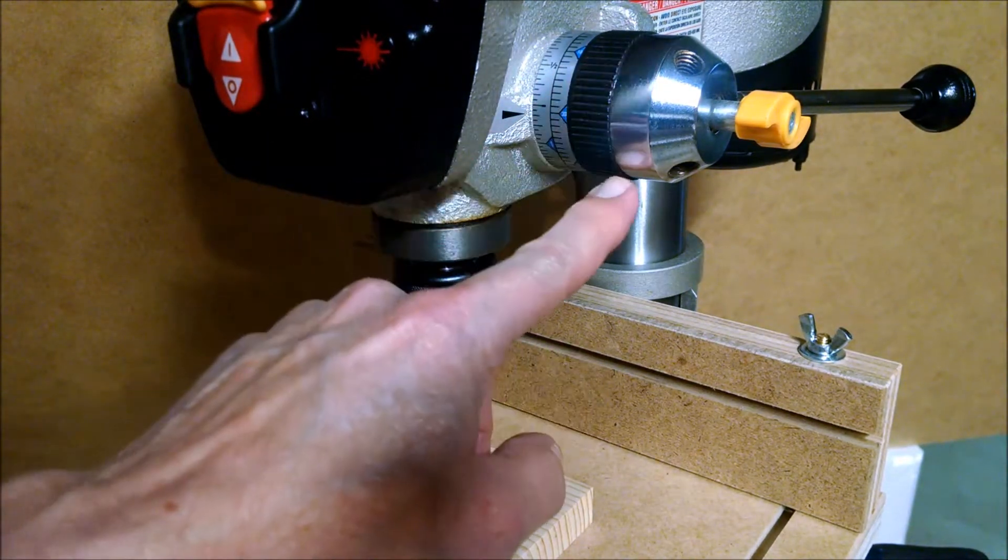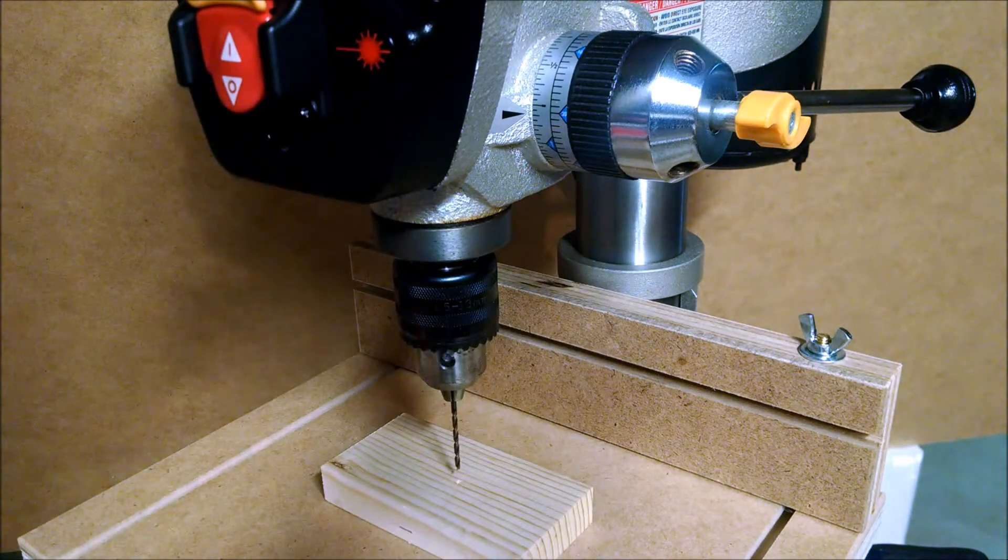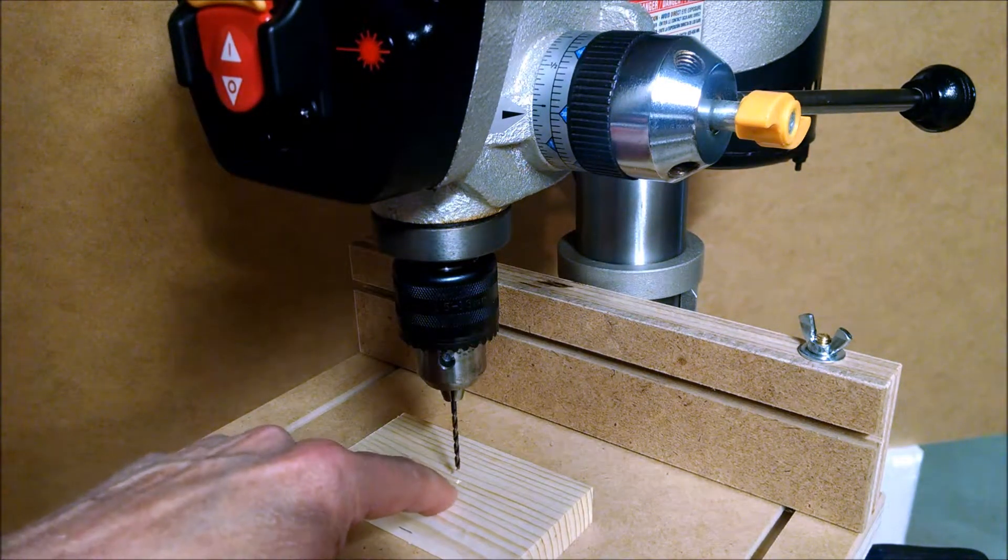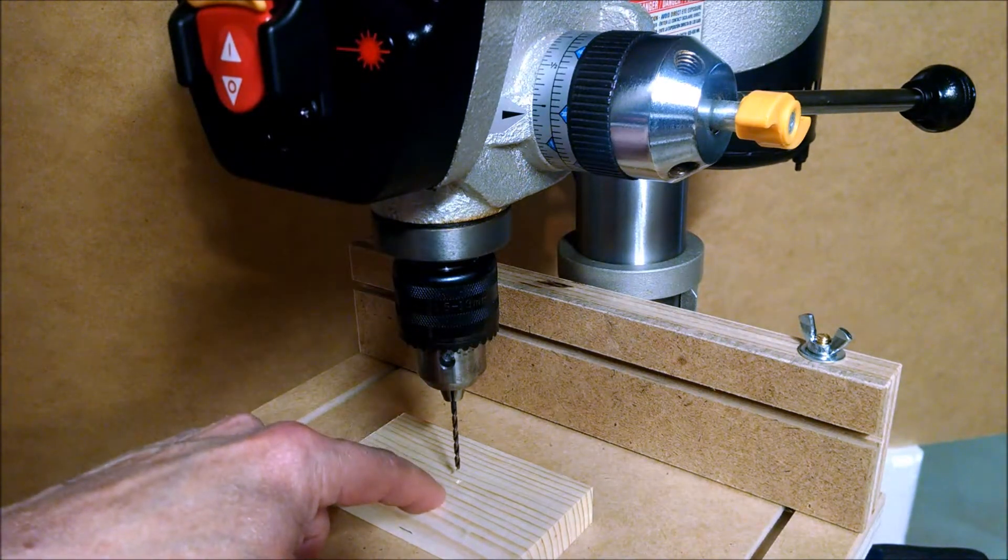You can see that I've removed two of the arms here for better visibility. Let's say that you need to drill a half-inch deep hole in this workpiece, and I've installed a drill bit here for that purpose.